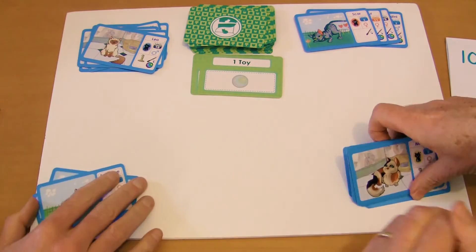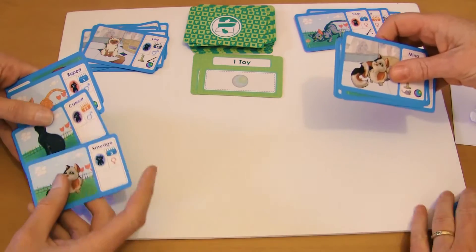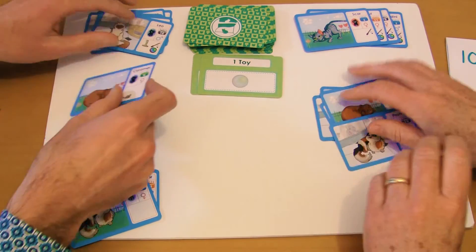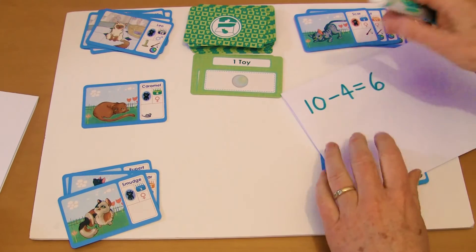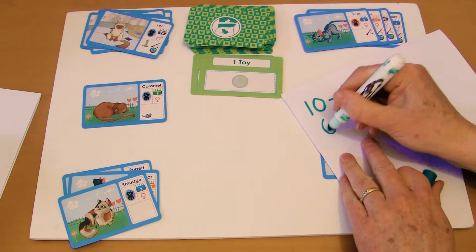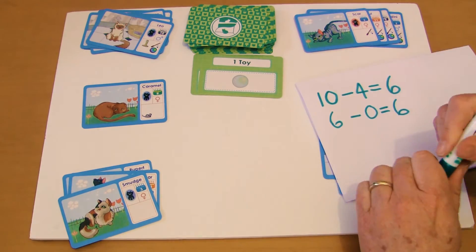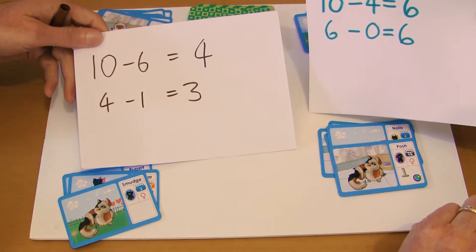That says one toy. Okay, how many have I got here? One, two, none. Okay, so I'm going to use zero here. So I've got six minus zero equals, I've still got six cats that haven't been adopted.